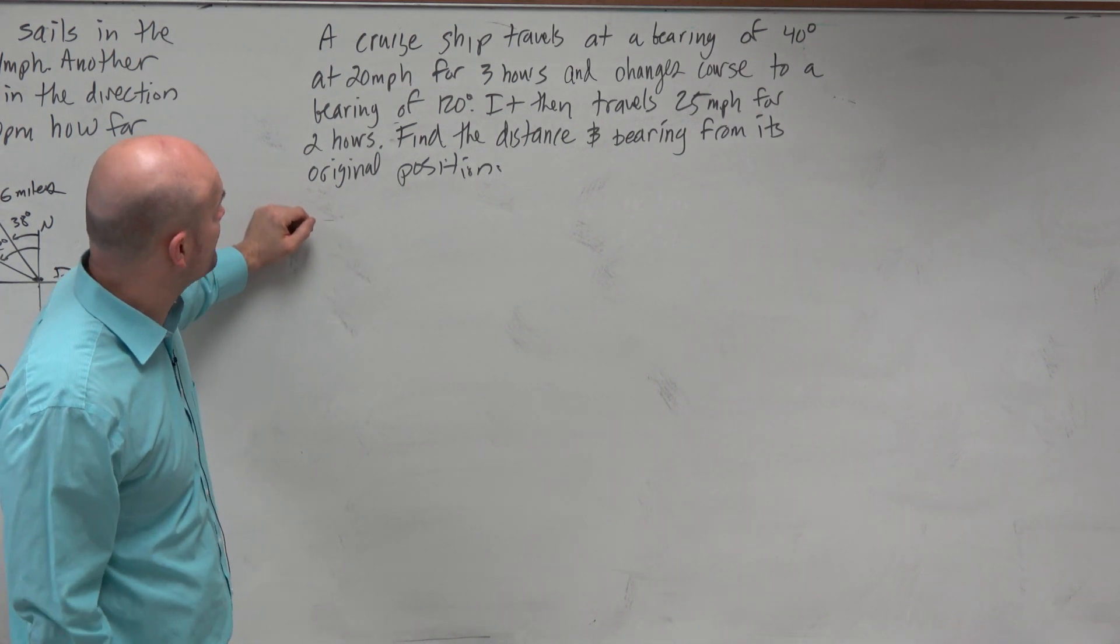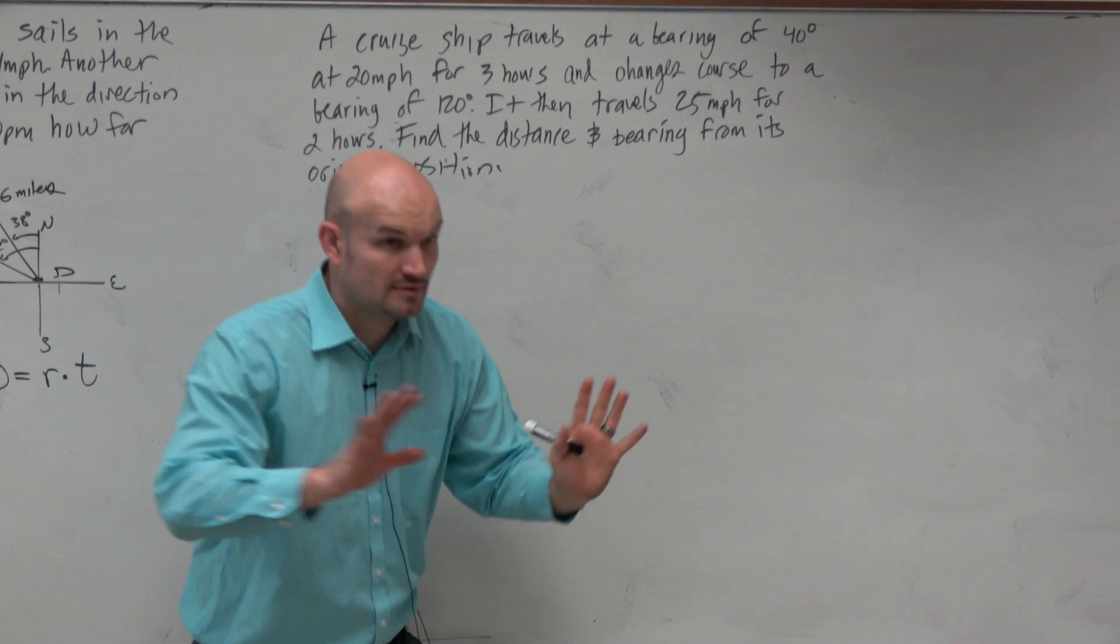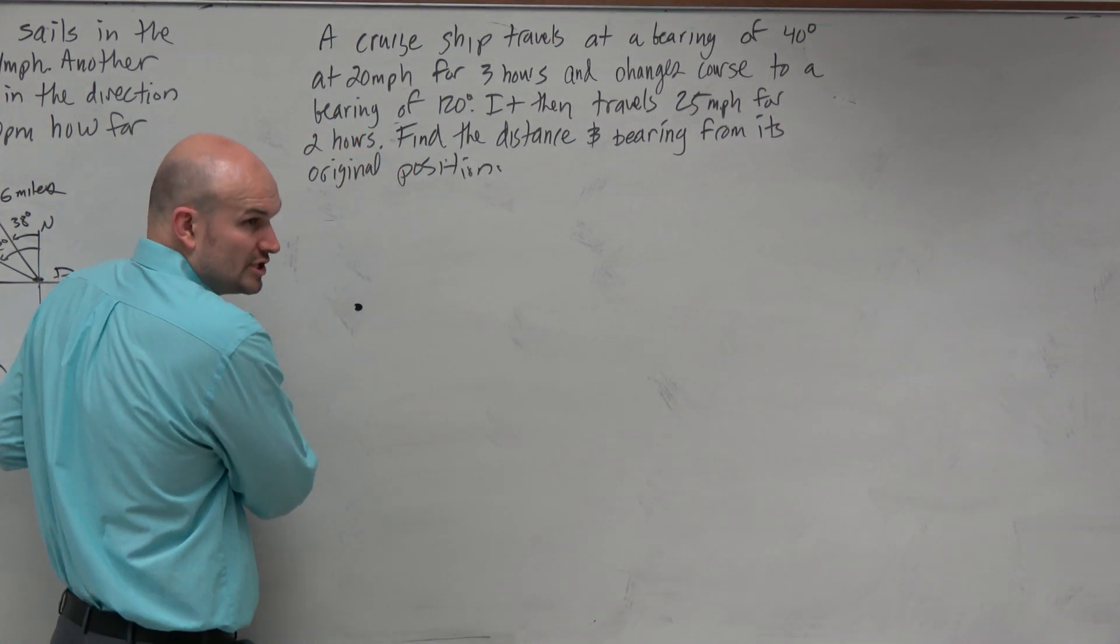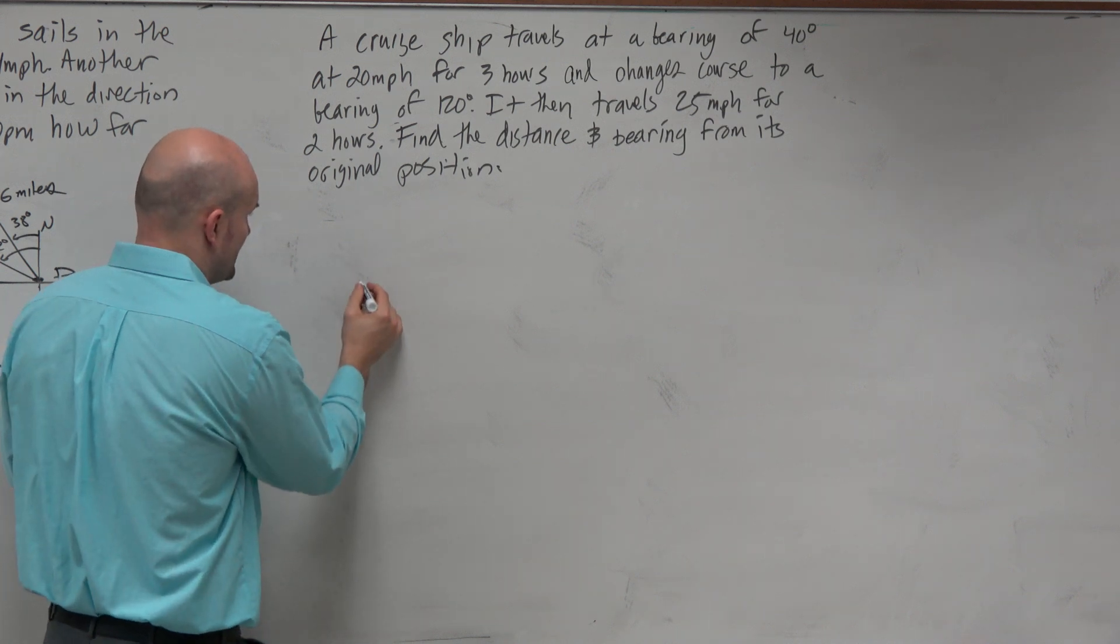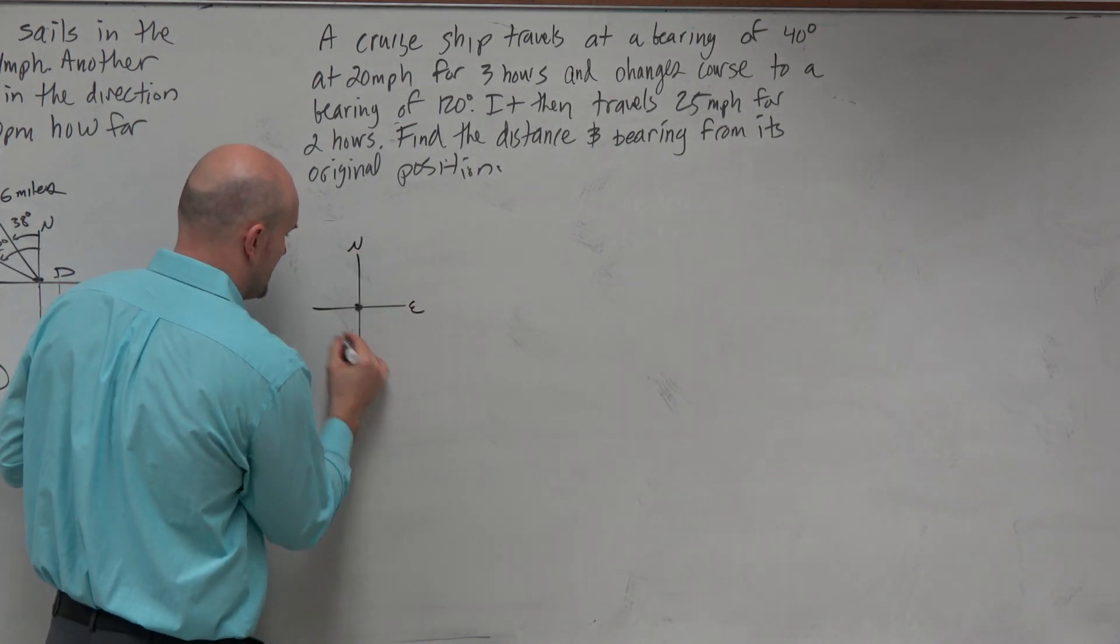So this one says a cruise ship travels at a bearing of 40 degrees at 20 miles per hour. So we have a bearing. Immediately once I see that I have a bearing, I'm just going to put a little dot and say it's a cruise ship leaving from port or in the open sea. But I'm going to draw my compass heading. So north, east, south, west.